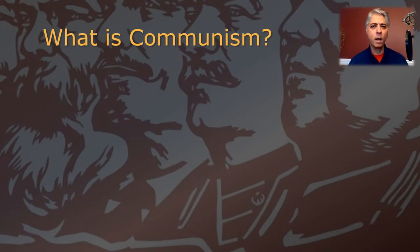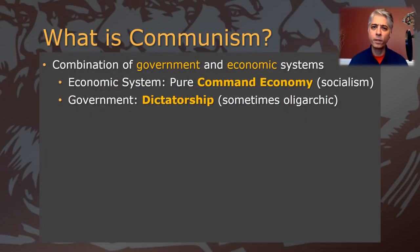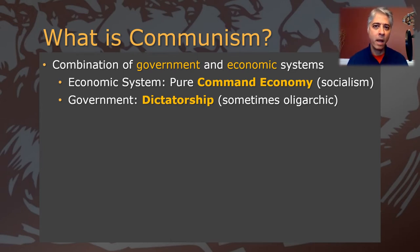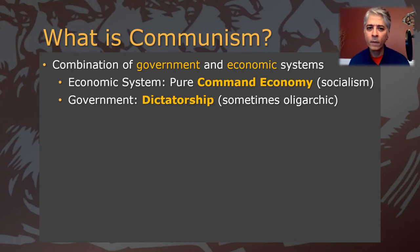What is communism? Well, communism is not just a type of government, as a lot of people assume. It's actually a combination of both government and economic systems. Economic system-wise, communism uses a pure command economy — we spent a lot of time talking about economic systems, so you understand what that means. A command economy can also be referred to as socialism. In terms of government, communist systems almost always use some form of dictatorship, although sometimes they can be oligarchic.